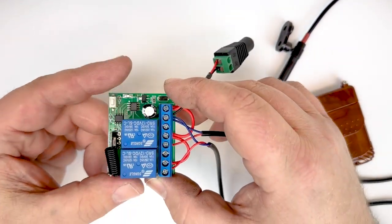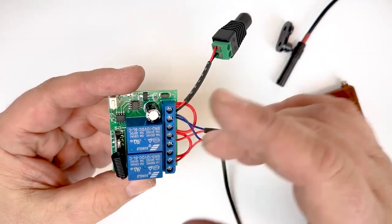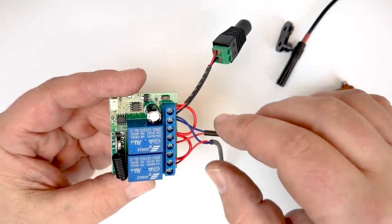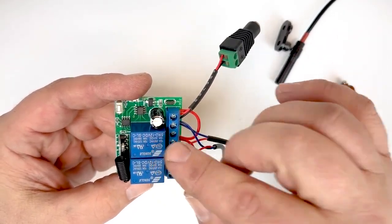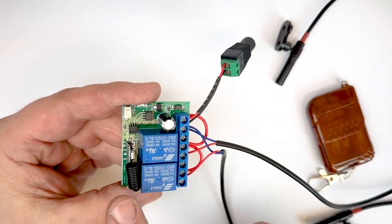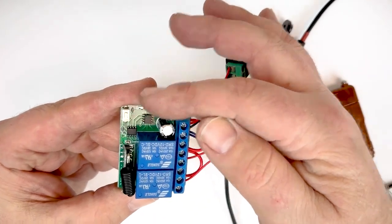First let's take a look at the circuit board itself. So this is our two relay model. We also have a 1, a 4, and a 12 relay. These are the two relays here. The antenna here and then there's a learning button here and we'll talk about that in a little bit.